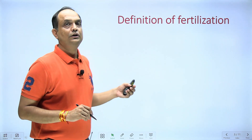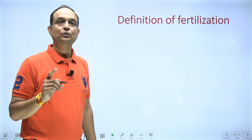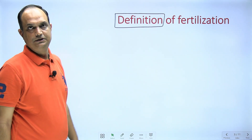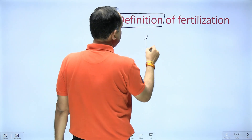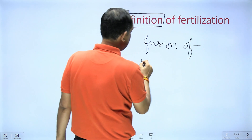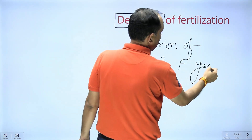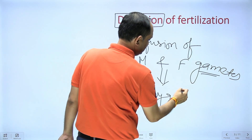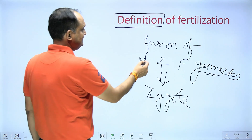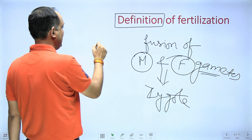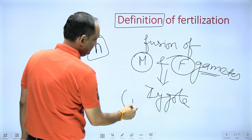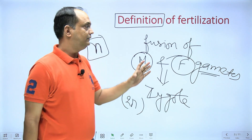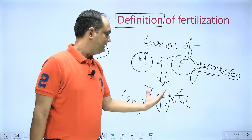The first thing when writing about fertilization is its definition. Fertilization means the fusion of male and female gametes. When these gametes fuse, you have a product known as a zygote. The sperm and oocyte are both haploid in nature, and the zygote is diploid. So fertilization is the process of fusion of male and female gametes to form a zygote.